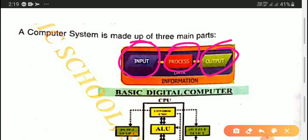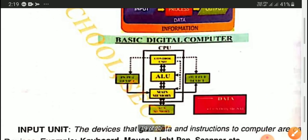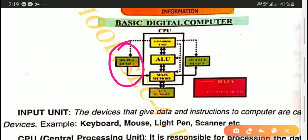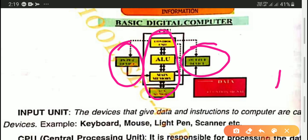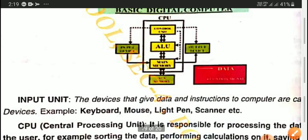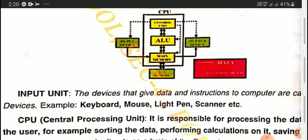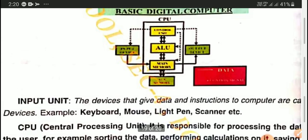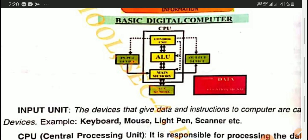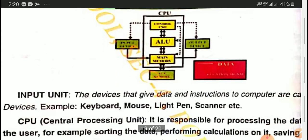The basic digital computer functions: when we enter any input or data, the CPU will do the processing, and then only we can get the output as a result. For example, take a cake — you can divide the steps of preparing cake into three steps. First step is preparing the batter, that is input. Then you keep that batter in the oven, that is called processing. After a few minutes, when you get a cooked cake, that is called output.